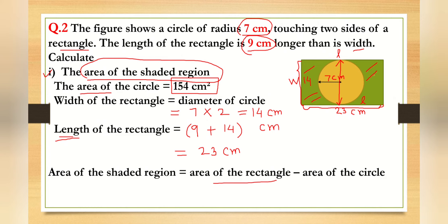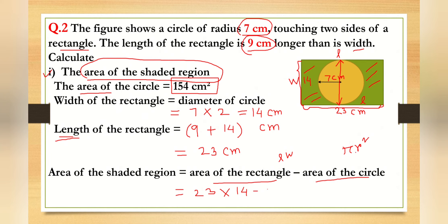Area of the rectangle equals length times width, so that is 23 times 14. Minus the area of the circle, which uses the formula pi r squared. Pi is 3.14 and r is seven centimeters, so seven squared gives us the area of the circle as 154 square centimeters.